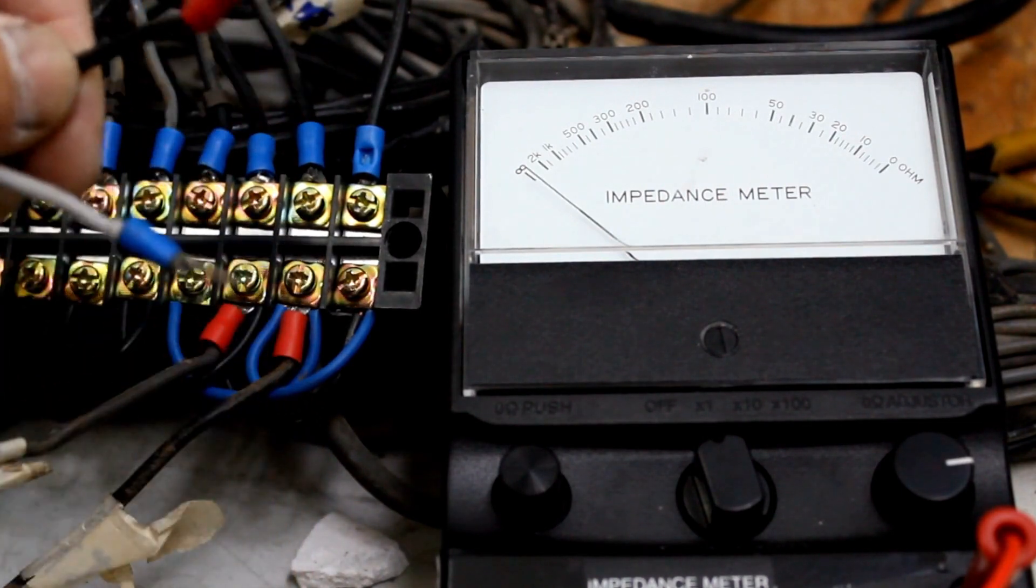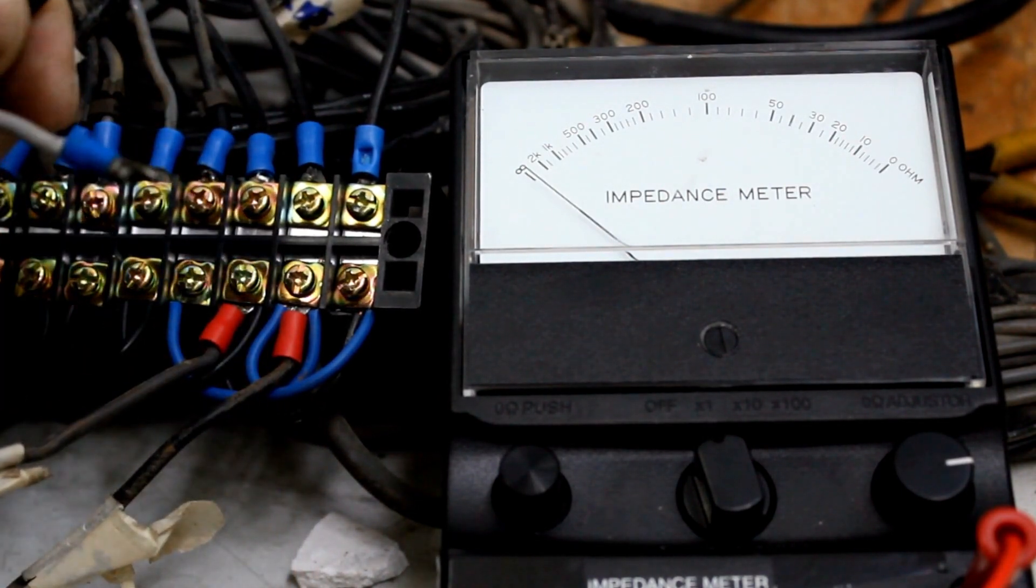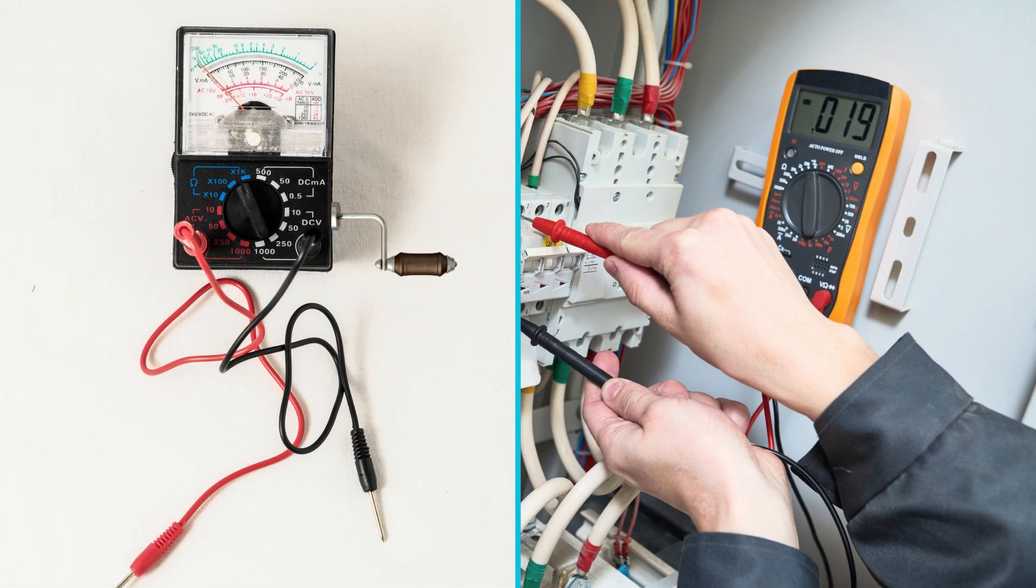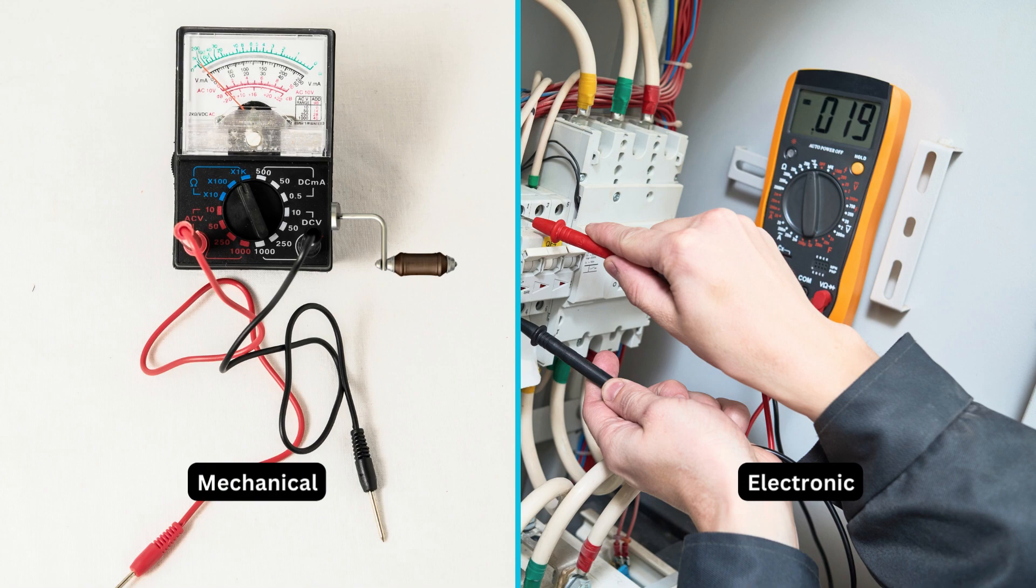Megger is actually a combination of both generator and ohmmeter. There are two types of Megger available in the market, electronic type and manual type.